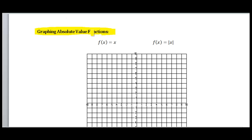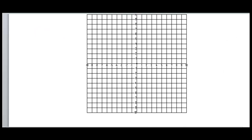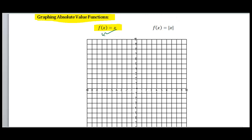Before we actually graph absolute value functions, I want to look at a repeat of graphing just a generic linear function, f of x equals x. I'm going to graph this in green using the slope and the y-intercept. f of x equals x is the same as y equals x. It has a y-intercept at zero and a slope of one, so if I go up one and to the right one, I'll have a point on my line, and I'm going to draw this line here.